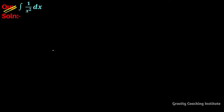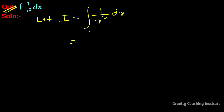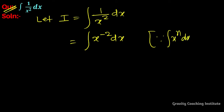The question is: integration of 1 upon x square dx. Let I equal to integration of 1 upon x square dx. The power, when brought to the numerator, will become negative. Using the formula: integral of x to the power n dx equals x to the power n plus 1 upon n plus 1 plus constant.